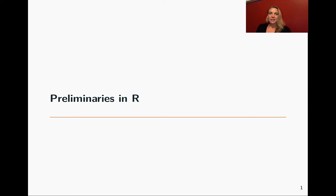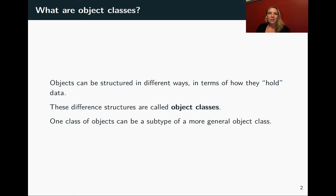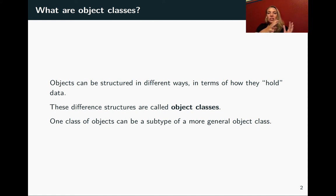We're continuing now with the preliminaries in R. We just talked about objects and functions, and now we're going to talk about some specific classes of objects — in particular, in this set of slides, vectors, and then we'll talk about data frames a little bit later. Anything you have in R is held in an object. There are different classes of objects, and depending on which class you use, you'll have a different structure, some different rules, and it will vary which functions can use that object as an input. These different structures are called object classes.